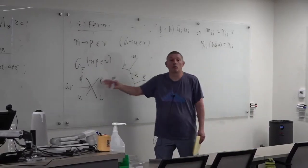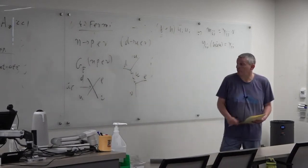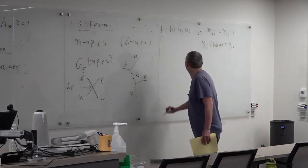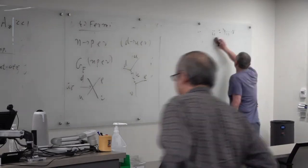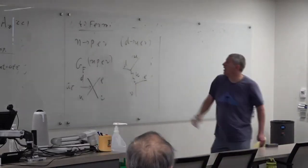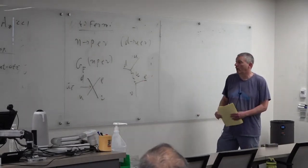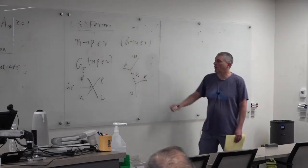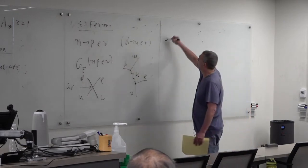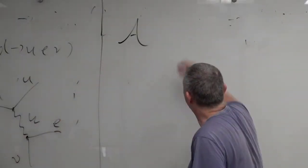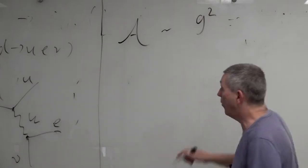How are the Fermi theory and the full theory related? In the full theory diagram, you have two weak coupling vertices, each contributing a factor of g (with the CKM element V_ud). The amplitude goes like g² over the W propagator. At energies much below M_W this becomes G_F × four-fermion operator — this is the connection between the effective and the full theory.